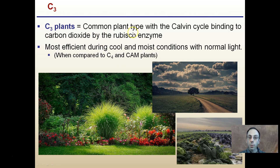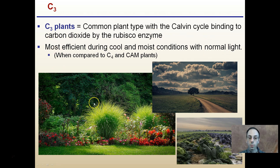C3 plants are the common plant type where the Calvin cycle binds carbon dioxide to the rubisco enzyme. They're most efficient during cool and moist conditions with normal light, which is why most plants are C3 plants. Examples include typical garden plants and field crops.